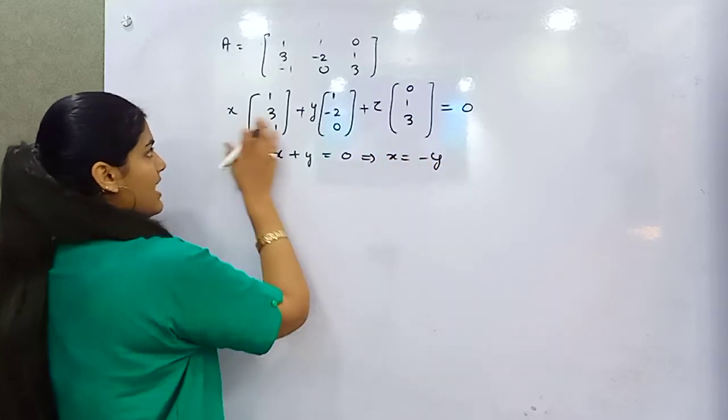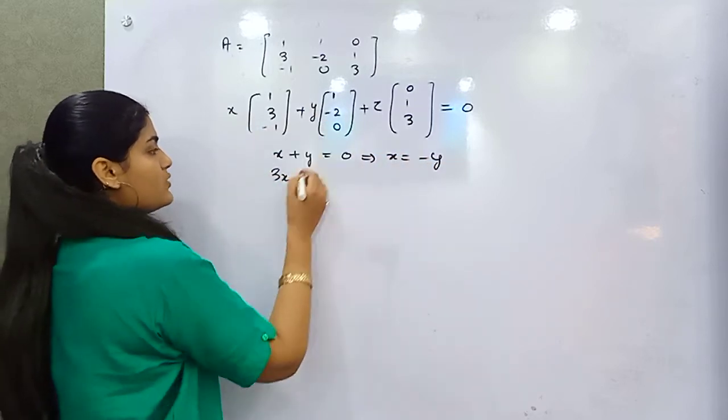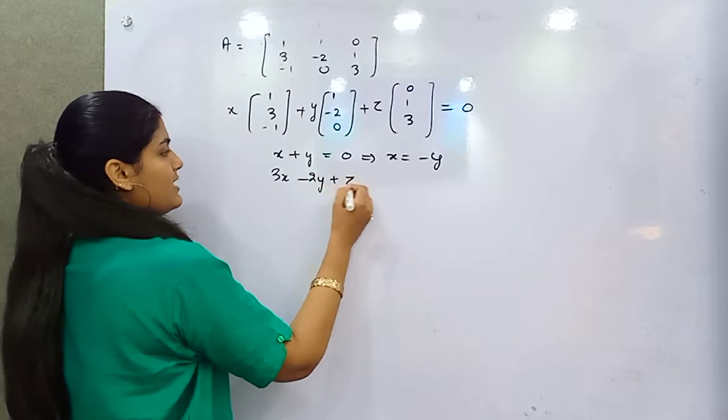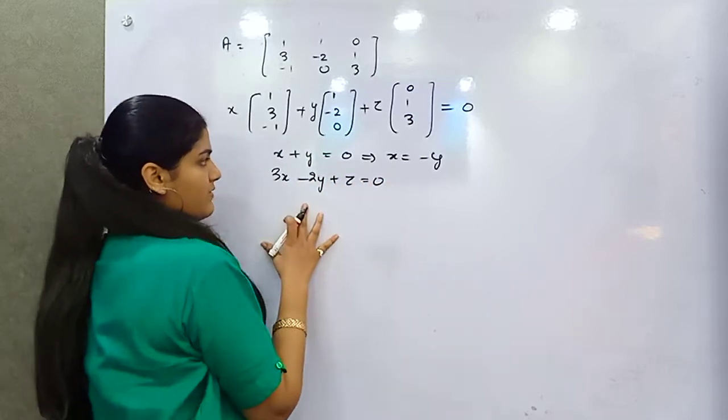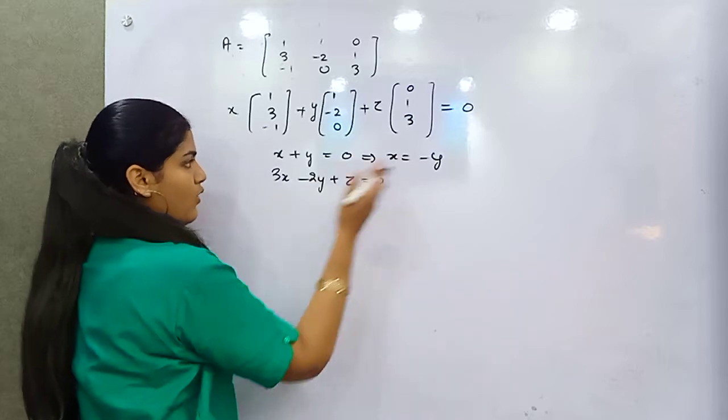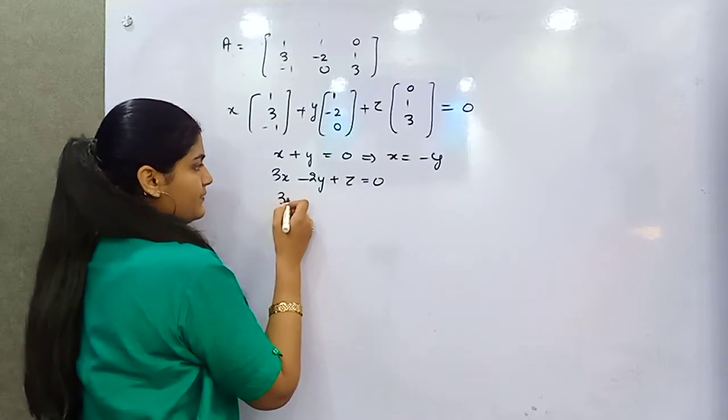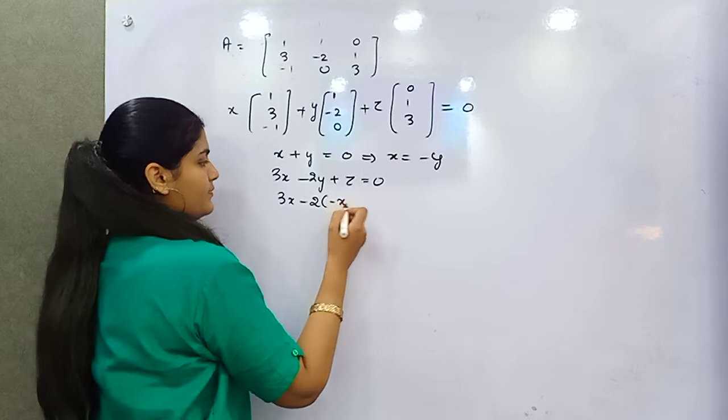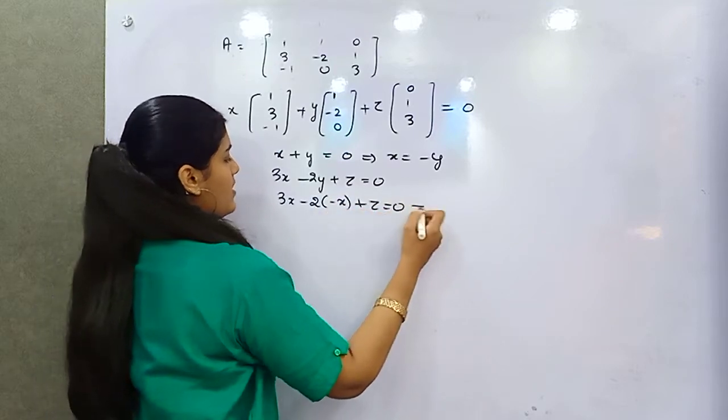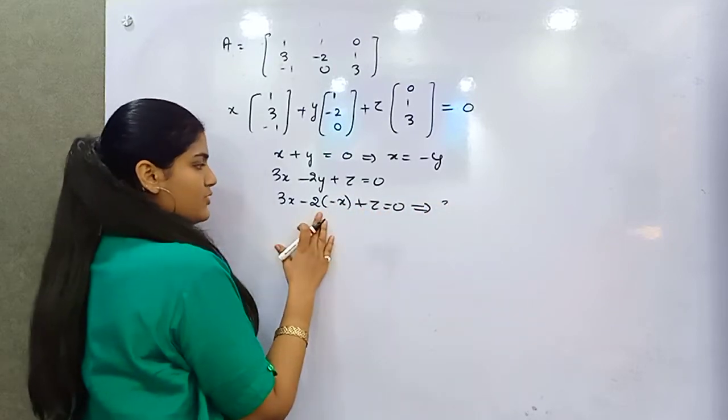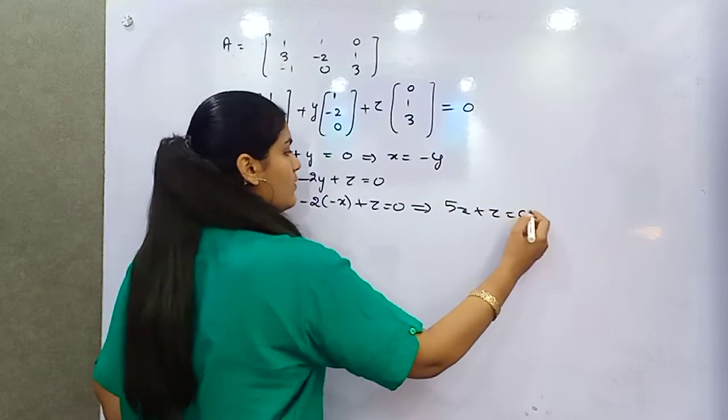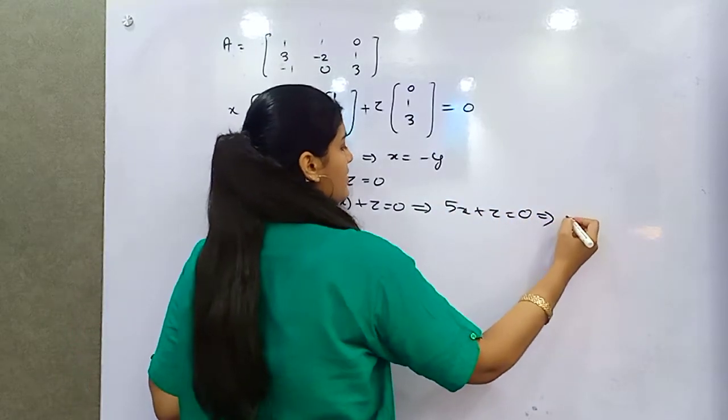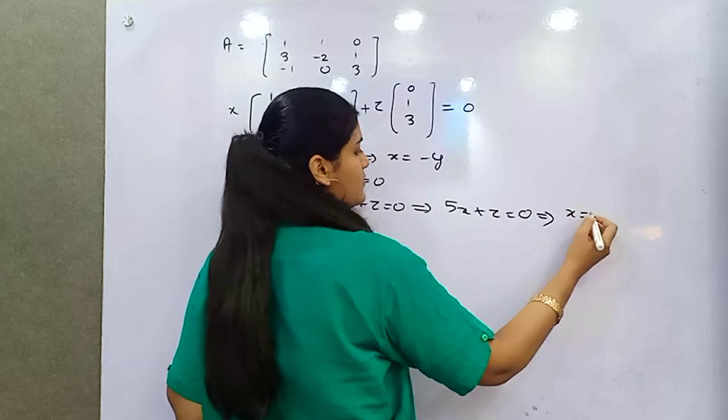Then after, 3X minus 2Y plus Z equals 0. From here, if you put the value of X as minus Y, or Y as minus X, it will be transformed into 3 and 2, 5X plus Z as 0. That means X is equal to minus Z by 5.